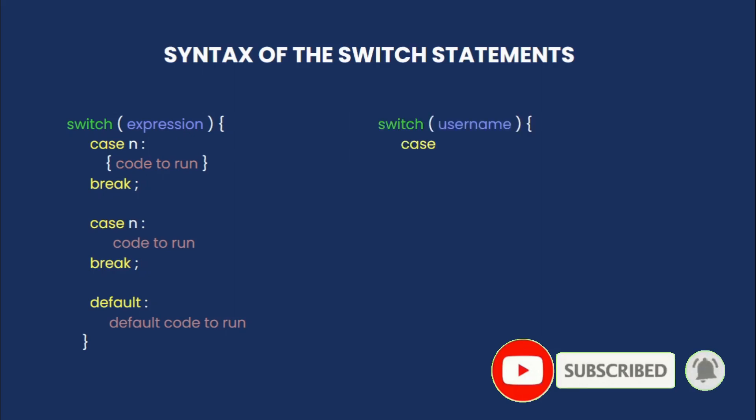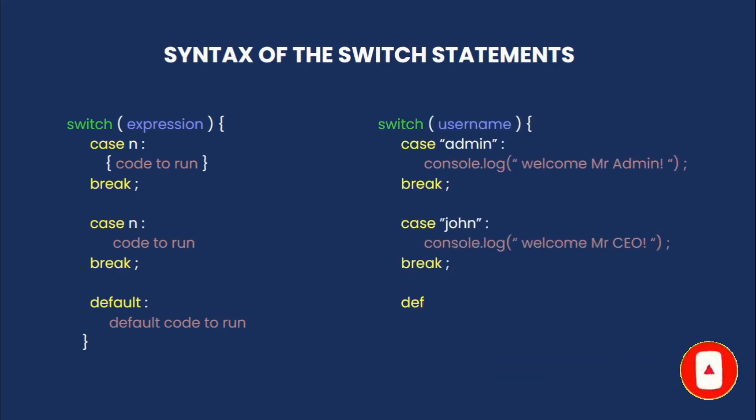Let's have a real example. We are switching the username, which could be a string. We have a bunch of cases — the first case is 'admin'. So if the username is admin, we perform something, for example console.log 'Welcome, Mr. Admin'. Then we should have the break, so if this case matches, we don't want to run the rest of the codes.